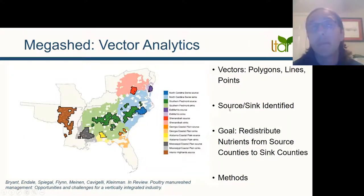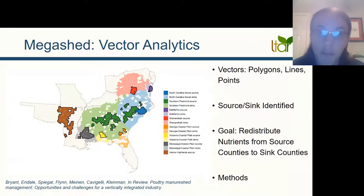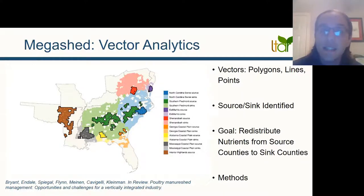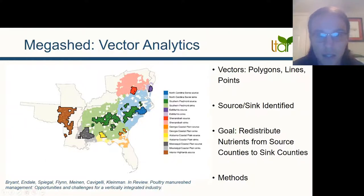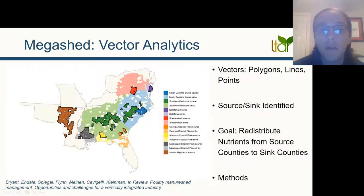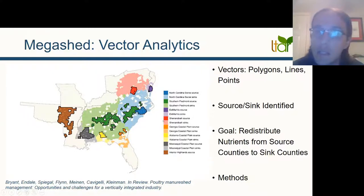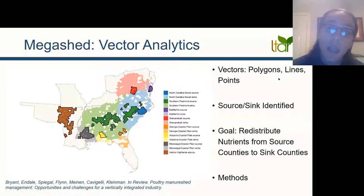The first example where we use these vector analyses is with the mega shed. Here we're using polygons, lines, and points. The polygons represent the counties, the lines represent the distances we'll discuss shortly, and the points are the centers of the counties or the edges of the clusters. The bold-colored counties are identified as source counties and we cluster them together with the bold outline you see around them.